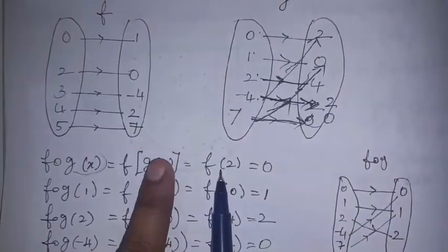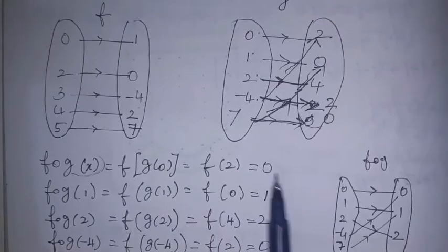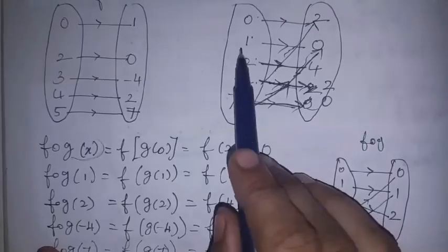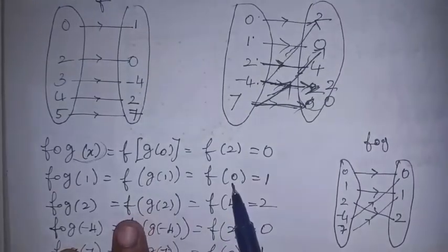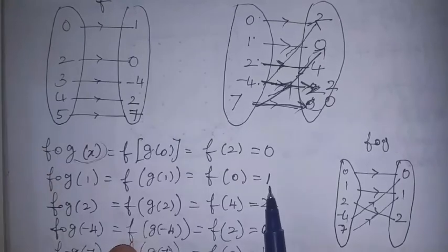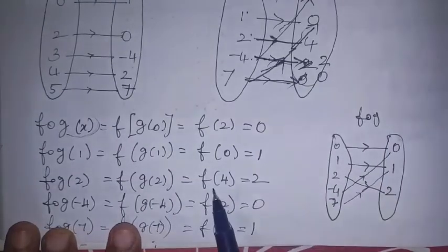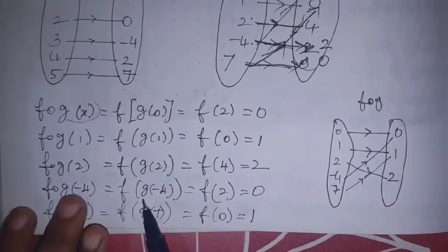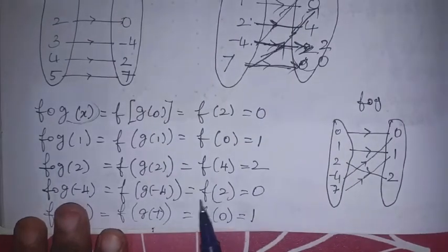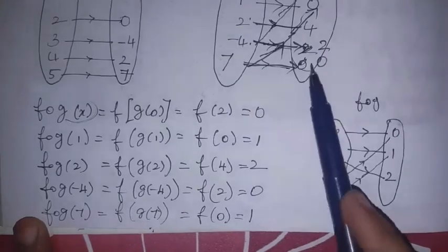g of 0 gives value 2, so f of 2 is 0. Next, f∘g of 1: g of 1 gives value 0, so f of 0 is 1, giving f∘g value 1. Next, f∘g of 2: g of 2 gives value 4, so f of 4 gives value 2. Next, g of minus 4 gives value 2, so f of 2 is 0. Next, f∘g of 7: g of 7 gives value 0, so f of 0 is 1.